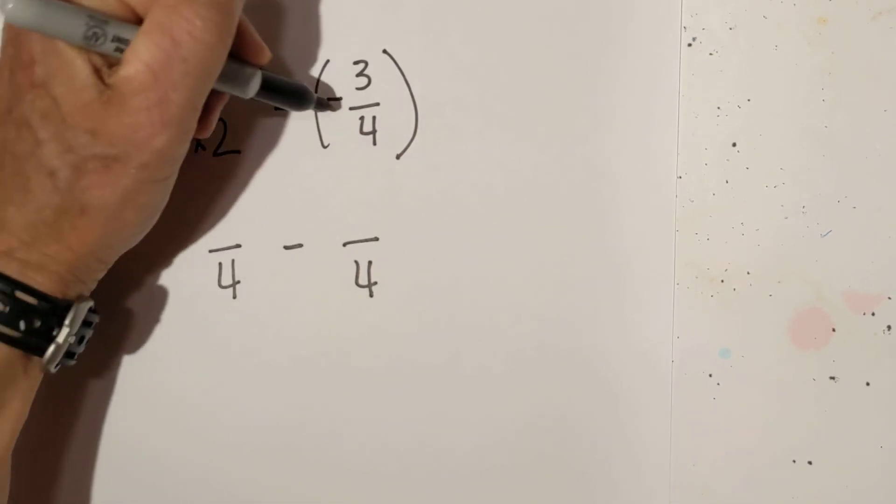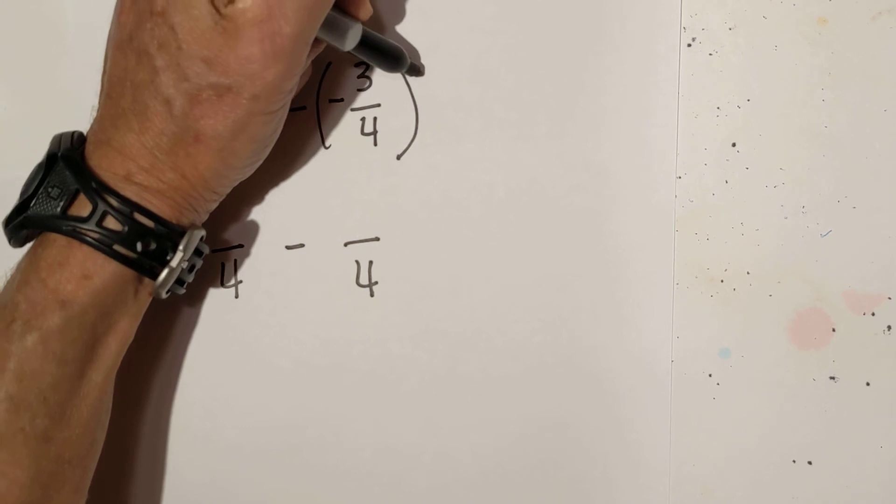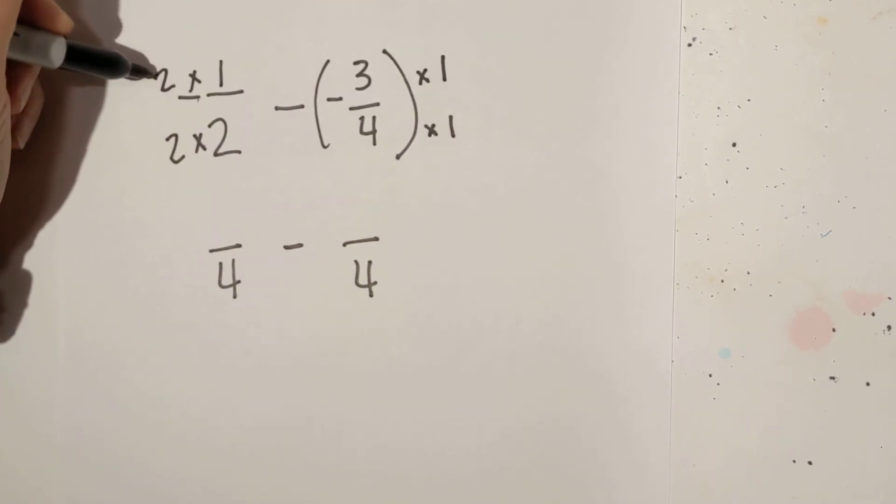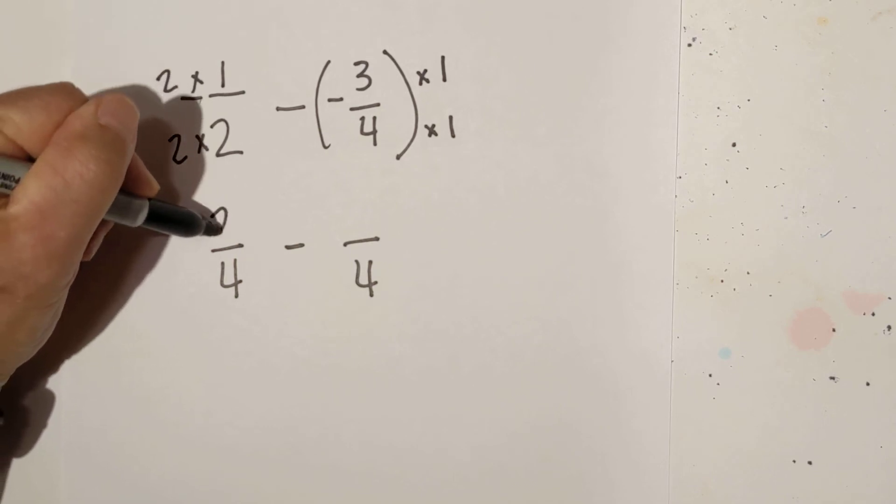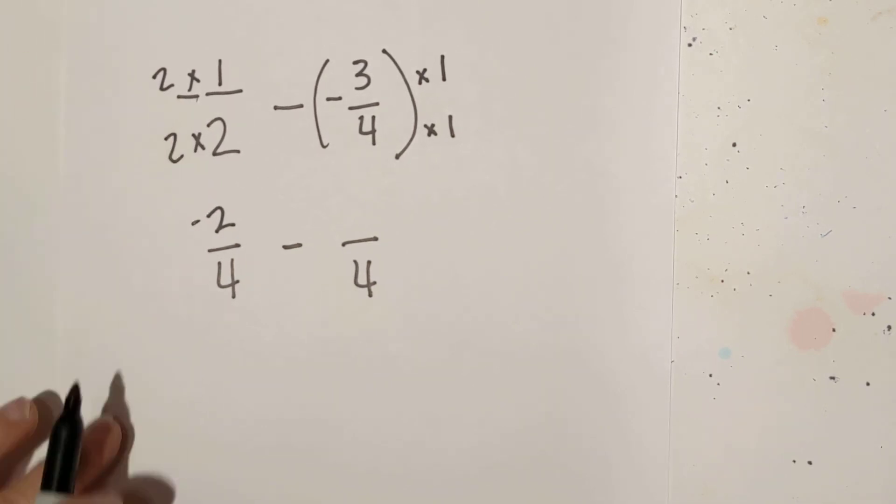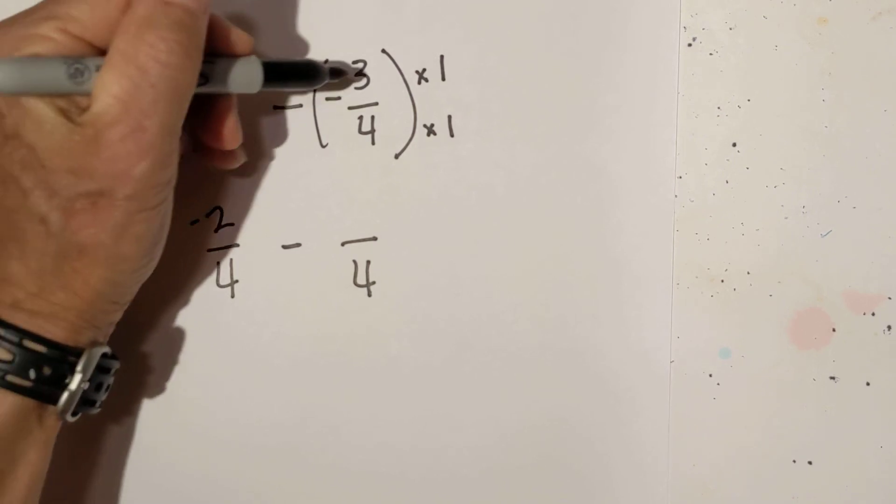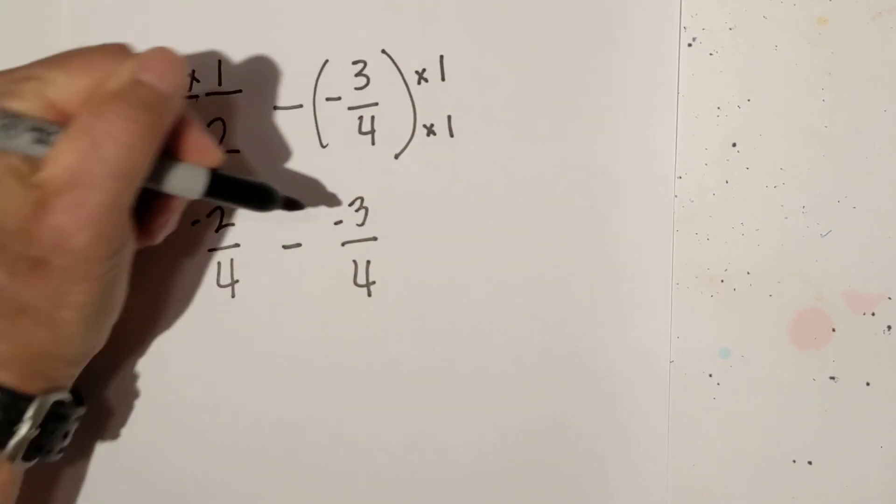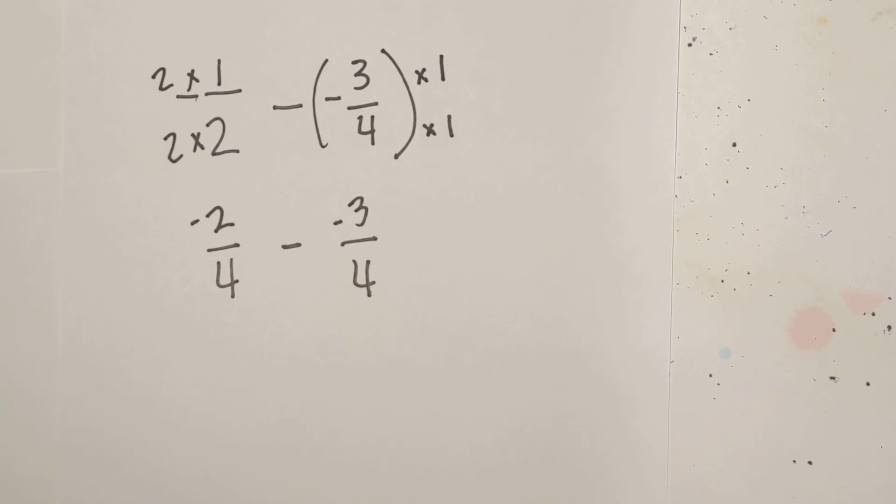And 4 goes into 4 1 times. So let's see what we have. 2 times 1 is 2. But remember the sign. It is a negative.